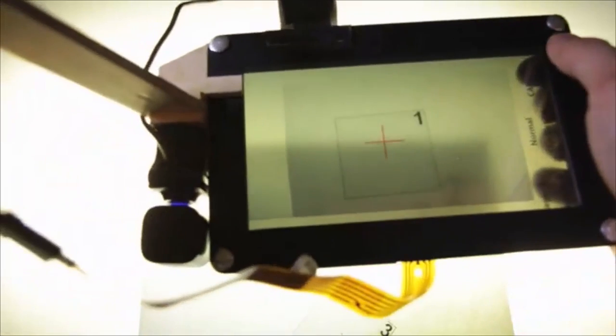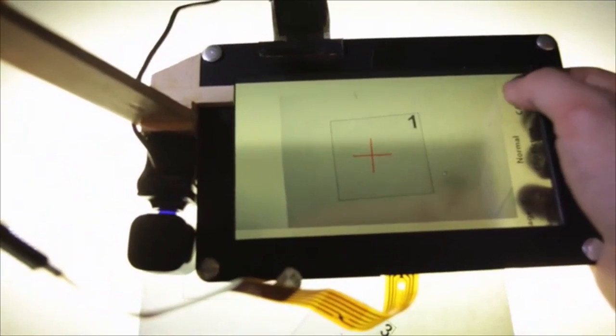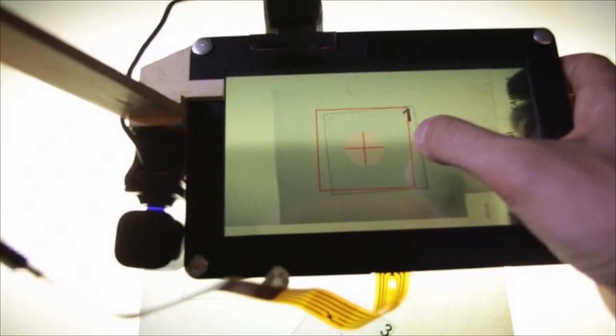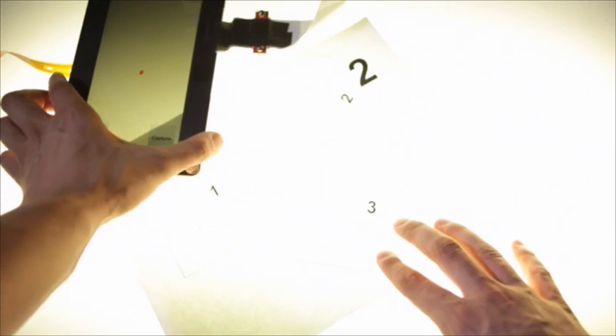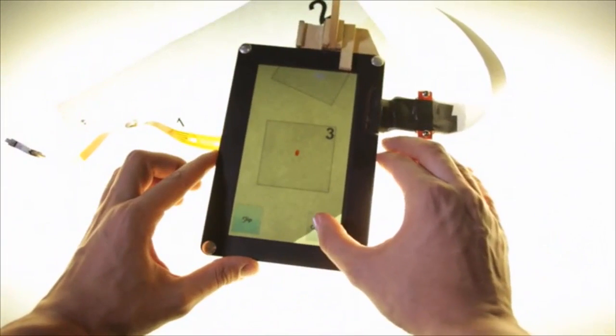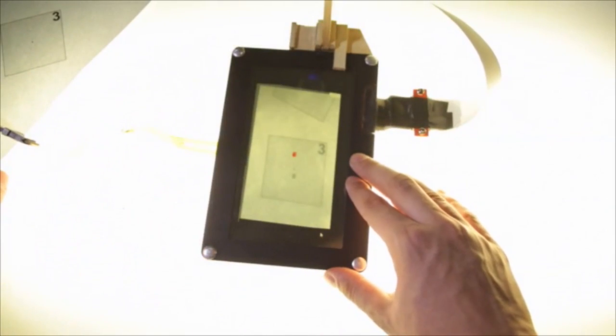The second experiment looked at the efficiency of taking a picture with surface capture versus a normal camera approach, and the effects of image cropping in both scenarios. Results showed that for objects of all sizes, surface capture performed faster and users preferred it over and found it more natural than camera capture.